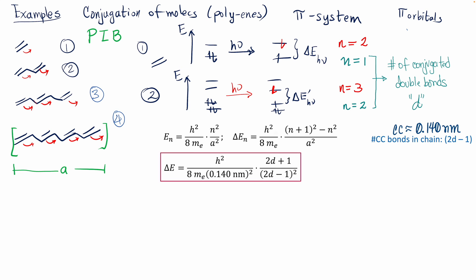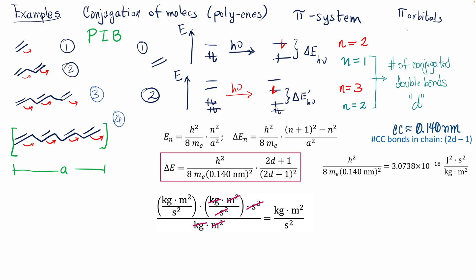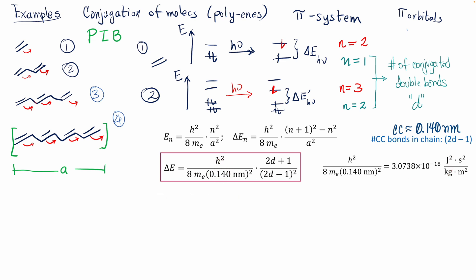Substituting the relationships between the energy level n and box length L in terms of the number of double bonds, we get a compact formula. The numerator corresponds to (n+1)² − n² and the denominator to the box length scaled by the number of double bonds, including the average carbon-carbon bond distance. This reduces to a single computable constant multiplied by a simple numerical factor. Checking units: the constants must carry units of joules, confirming the energy change is in joules.